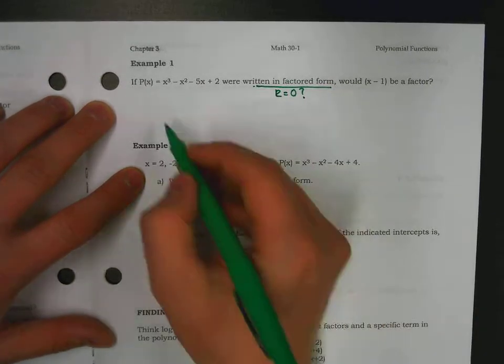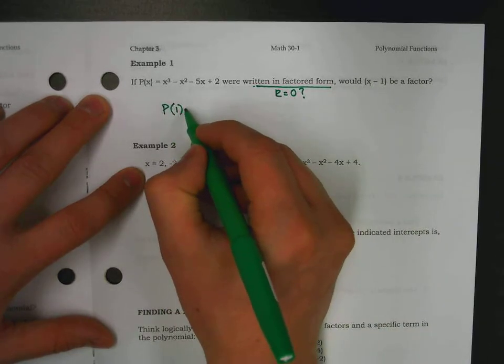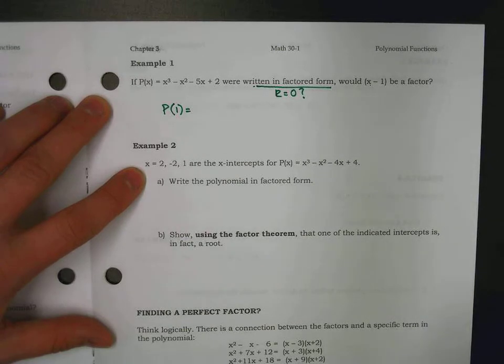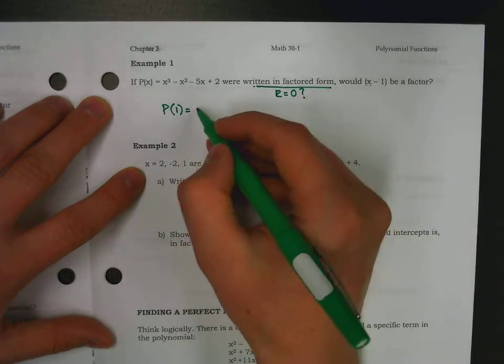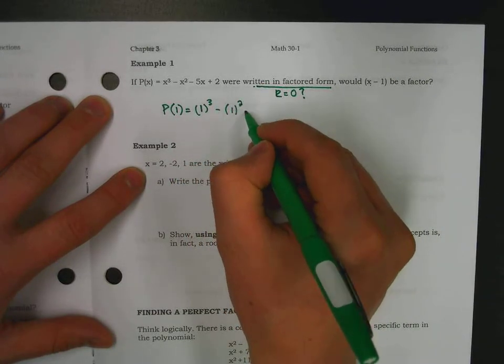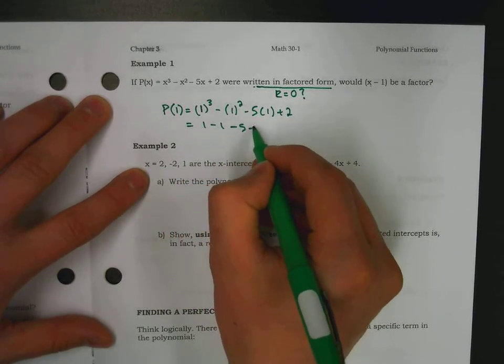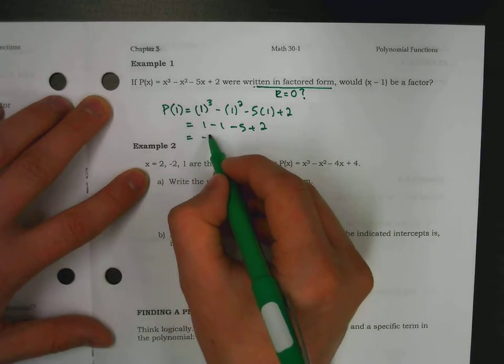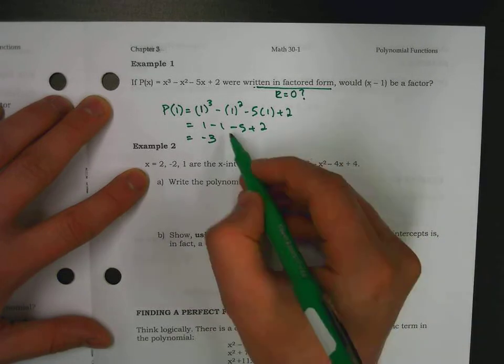Well, let's plug in x equals one, which is essentially doing the remainder theorem to see what the remainder is. If the remainder is zero, we're essentially saying through the factor theorem that it is a factor. So, the remainder theorem and the factor theorem are very tightly connected. One minus one minus five plus two, we have a remainder of negative three. Is x minus one a factor? No.